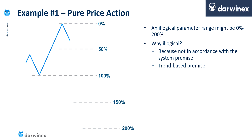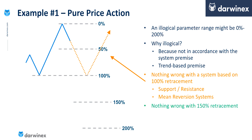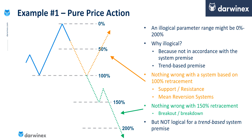There is nothing wrong with a trading system that is based on 100% retracement. Indeed, if you're trading a system that relies on support and resistance, where reversals often occur where price changed direction in the past, and also if you're testing a mean reversion type system, where again 100% retracement is often a good turning point. And equally, there's nothing wrong with a 150% retracement — if you're trading a breakout system, this signifies that the price has broken below a previous low. So I'm not saying you shouldn't use these values. What I'm saying is that if you're testing a system premise based on a trend-following system, then those values are illogical.